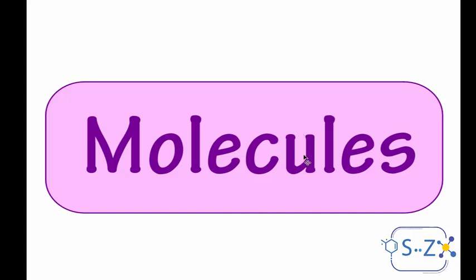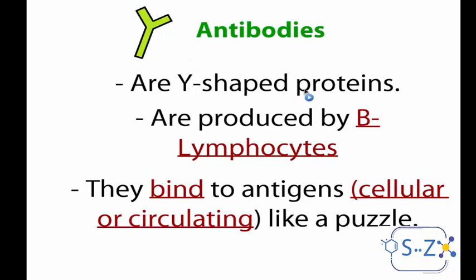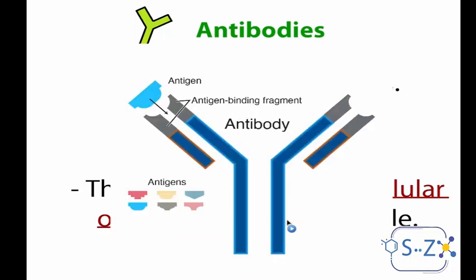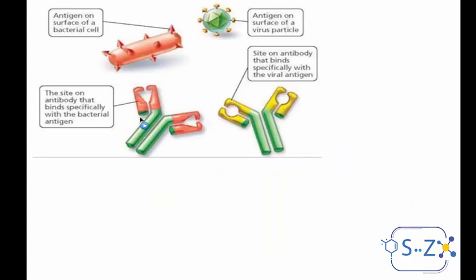Last but not least, let's talk about the molecules of the immune system — antibodies. Antibodies are Y-shaped proteins produced by B lymphocytes. They bind to antigens — whether cellular or circulating — just like puzzle pieces. All antibodies share the same Y-shaped structure, but their binding sites are different: each binding site can bind to a specific antigen.